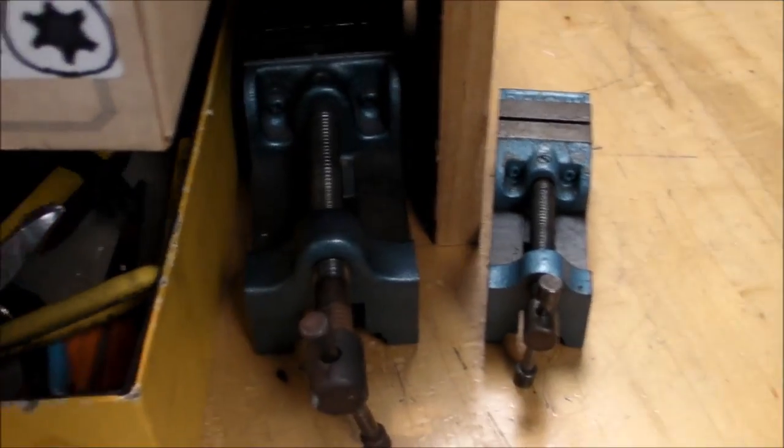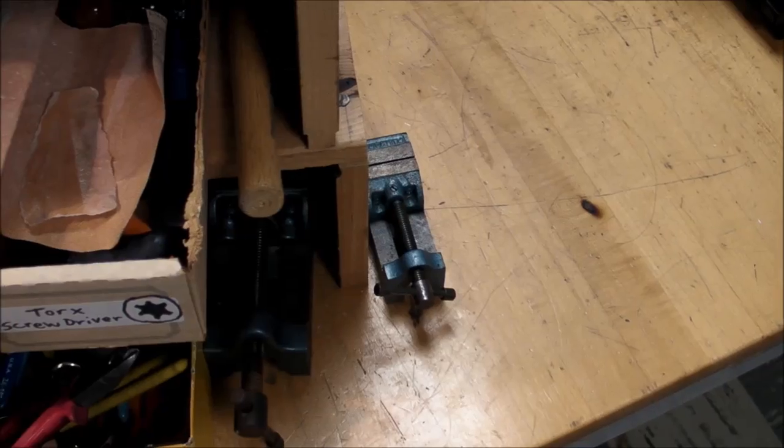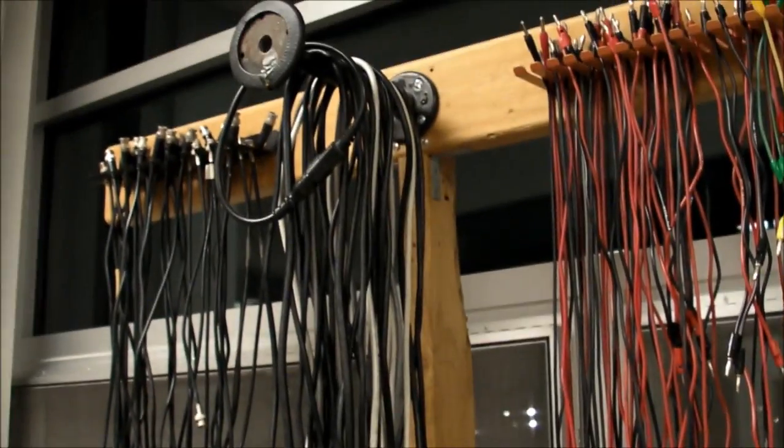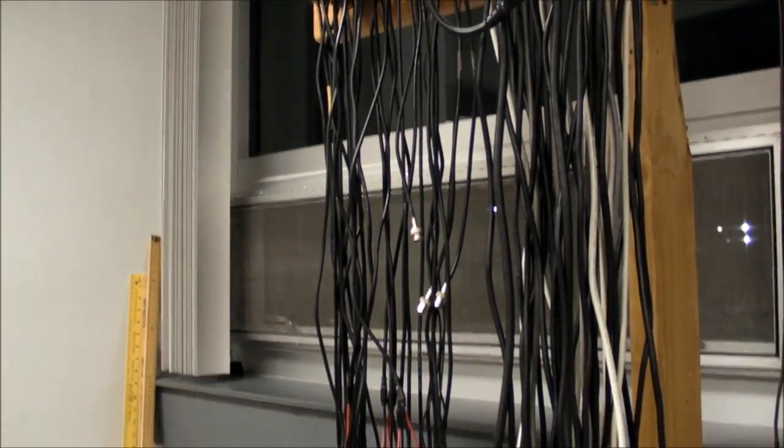Small little vice grips. And over by the window got this big stand, the big wire rack here with all the banana jack leads and power cords hanging in the middle on the steel pipe. And over on the left is all the BNC cables.